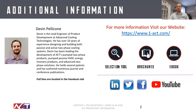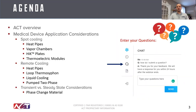At the end of this webinar, if you need more information, you can always visit our website at 1-ACT.com. We have a number of resources available there where you can find brochures on our products or reach out to a salesperson for more specific inquiries. You can enter your chat into the dialog box shown on the right. Just click on the chat icon, type your question into the chat box, and we'll receive that and respond to you with an answer.